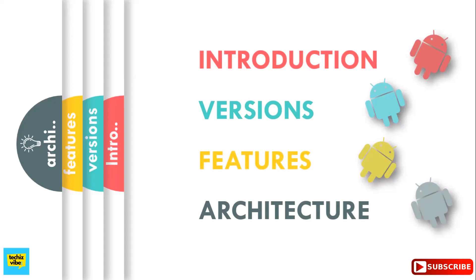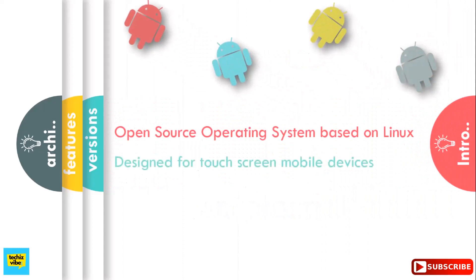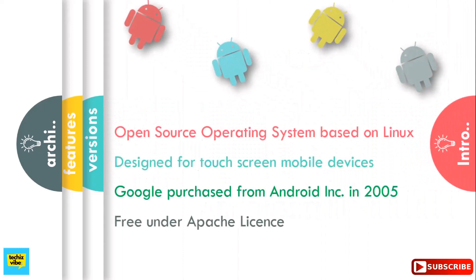Android is an open source operating system based on Linux. It is designed primarily for touchscreen mobile devices such as smartphones, tablets, etc. Android was originally developed by Android Inc., then Google purchased it in 2005. Google made Android an open source operating system, meaning it is free under the Apache license and manufacturers can use it. Android has millions of applications available in Google Play Store that can help you manage your life. Most of the applications are free or low cost. Thus Android became popular.